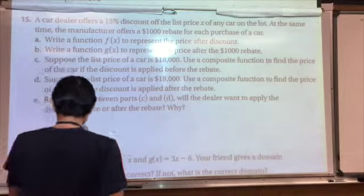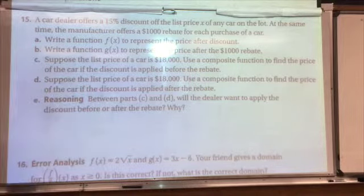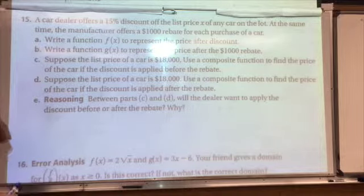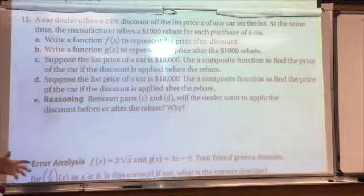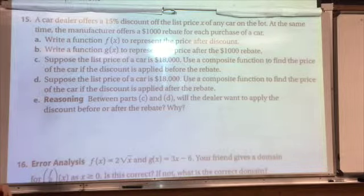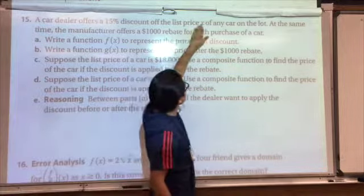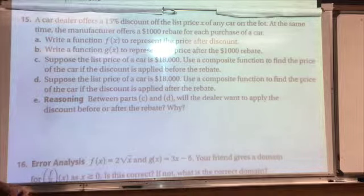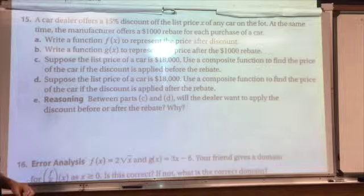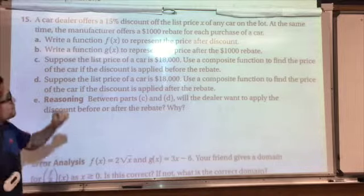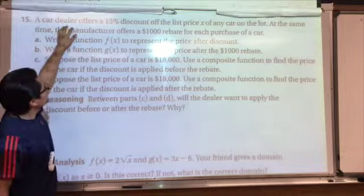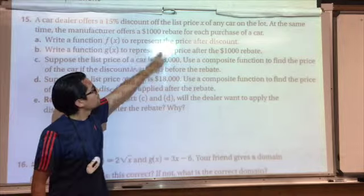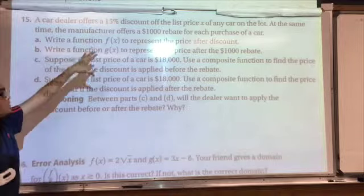Now let's look at a real world situation where you might have to do some composition of functions. A car dealer offers a 15% discount off the list price X. X represents the list price of the car on the lot. At the same time, the manufacturer offers a $1,000 rebate for each purchase of a car.